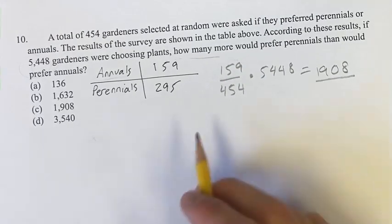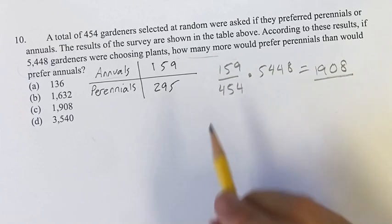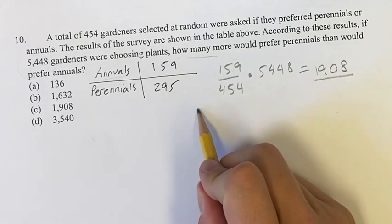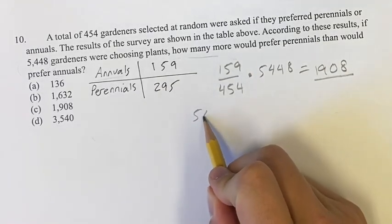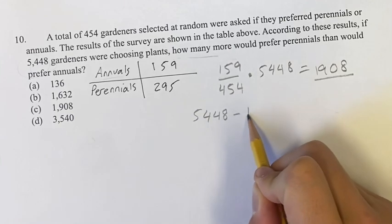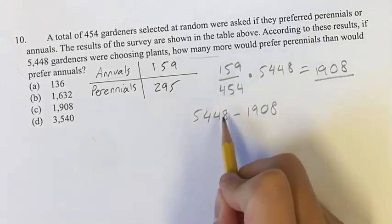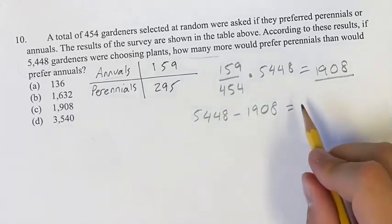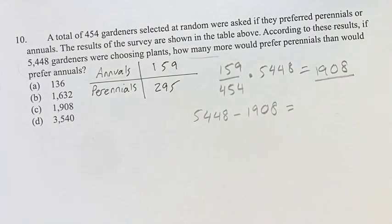Now you can do the same with 295, plugging it into a similar equation, or you can just say, if they don't prefer annuals, they have to prefer perennials. So the number of perennial favors is going to be 5,448 minus 1908. So the total minus the annuals is everyone that's left is just going to be perennials. And we find out that that is 3540.